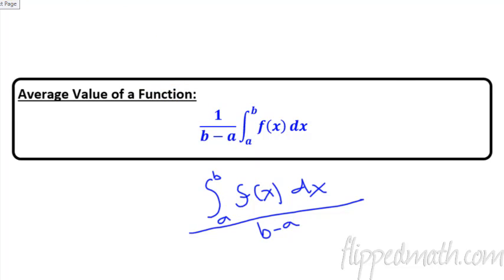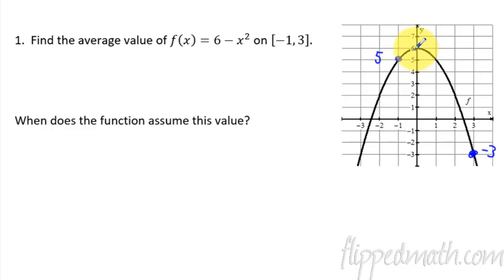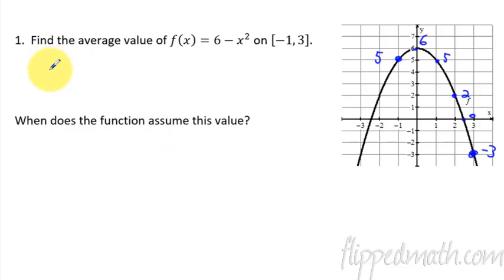Let's put this into practice. Find the average value of this function on the interval negative one to three. At x = -1, the function is at a y-value of five, and at x = 3 it's down at negative three. The function goes up to a high of six, then back down through five, two, zero, and negative three. What would be the average y-value across that interval?